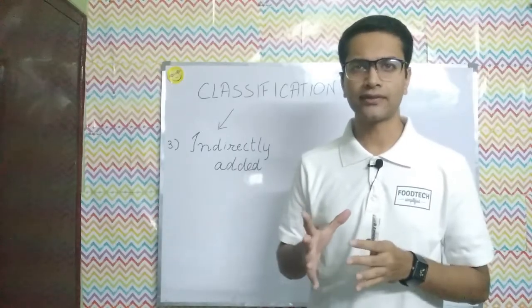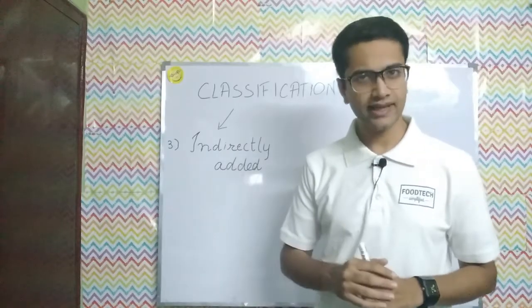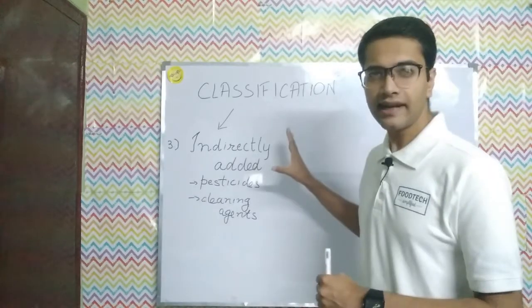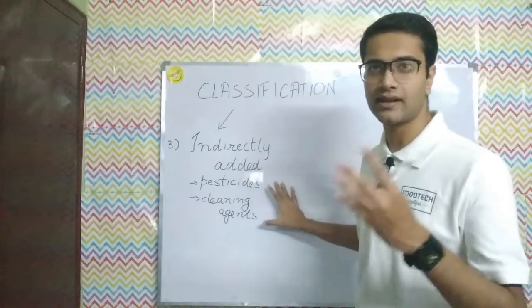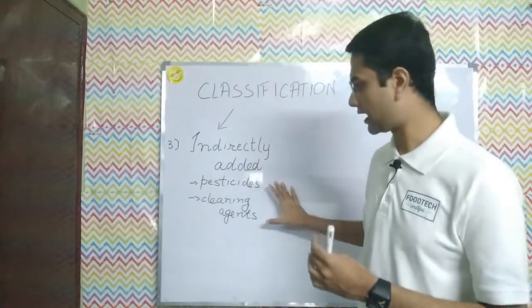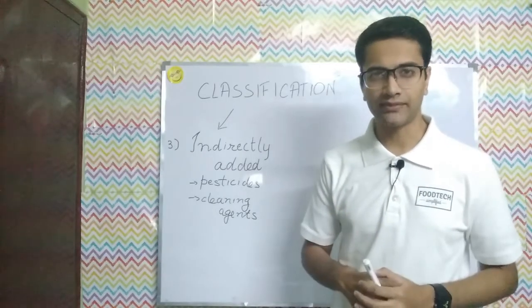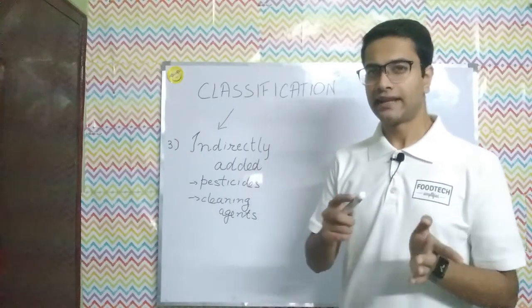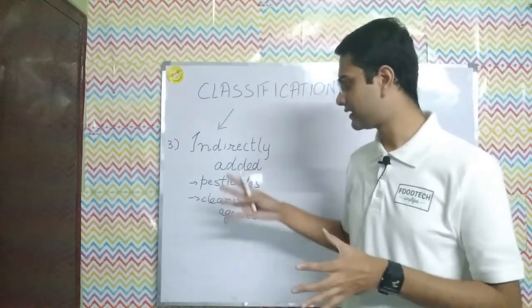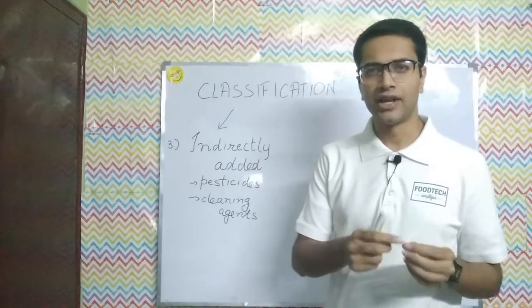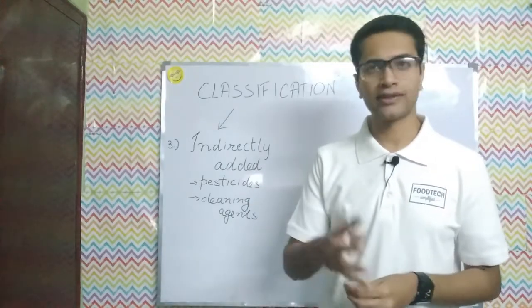The third category is the indirectly added chemical hazards. These involve pesticides and fertilizers used in agriculture, as well as cleaning agents like sanitizers and lubricants used in machinery. The chemicals from these pesticides, fertilizers, and cleaning agents could enter into food if they come in contact with the crop or with a food product.